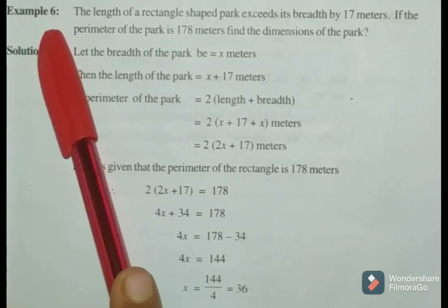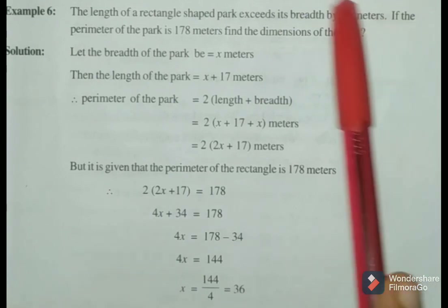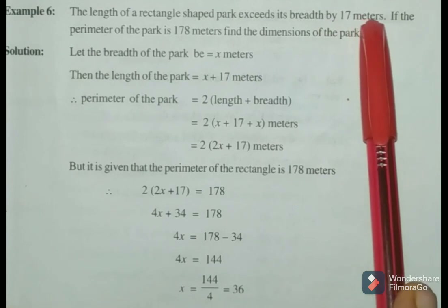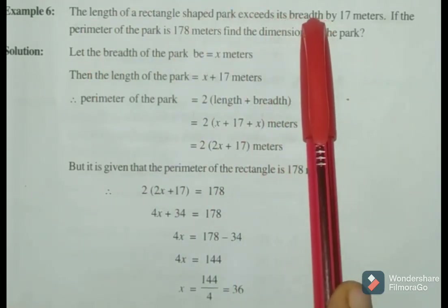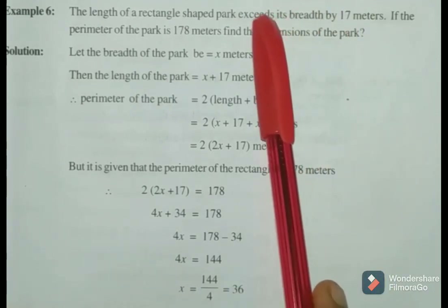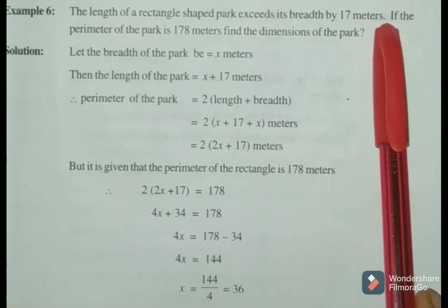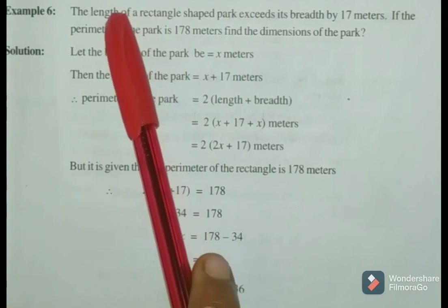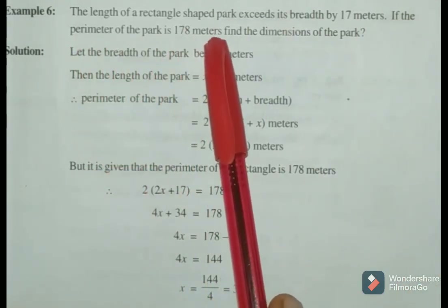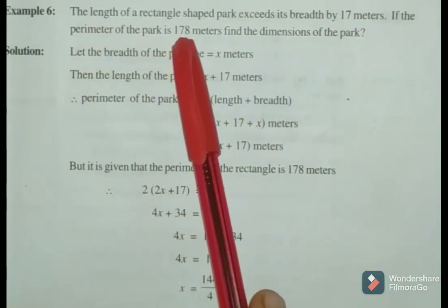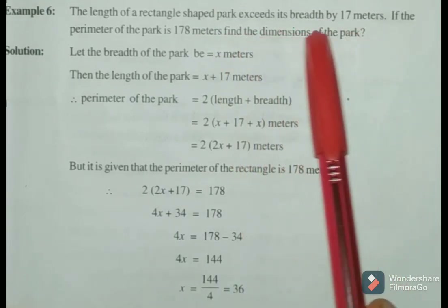Next example, Example 6: The length of a rectangle-shaped park exceeds its breadth by 70 meters. If the perimeter of the park is 178 meters, find the dimensions of the park. The dimensions are the length and breadth of the rectangle.